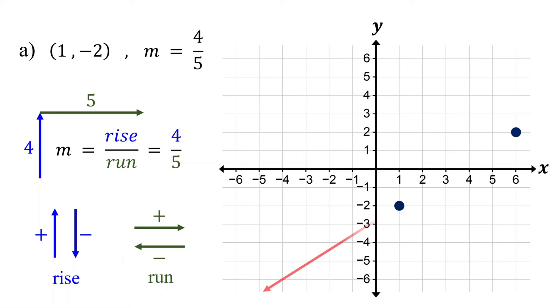Finally, draw a line that passes through the points. That's your line. Notice how the positive slope makes the line rise as you move from left to right.